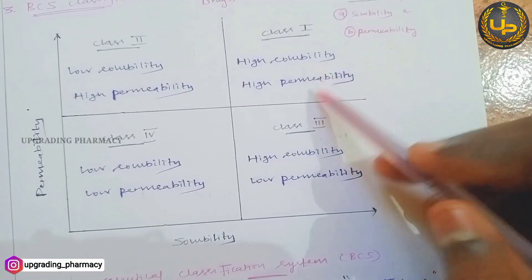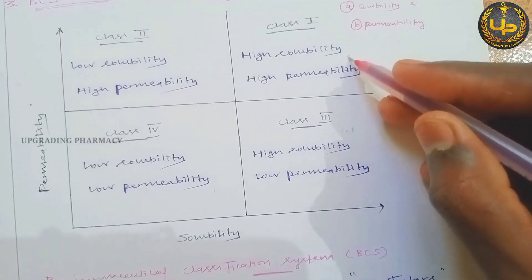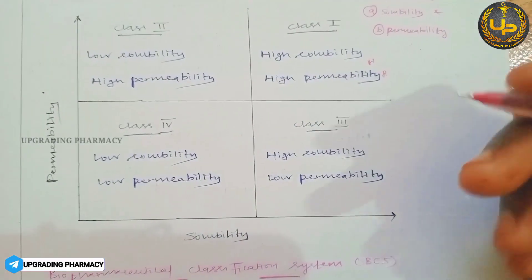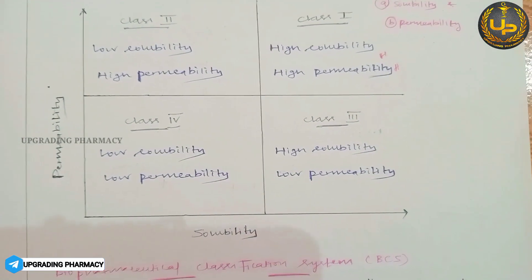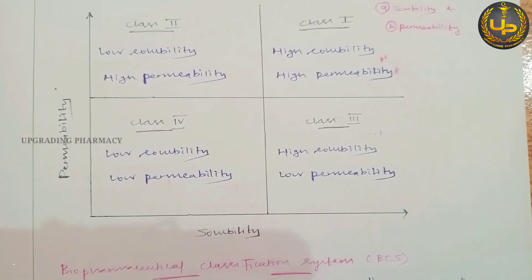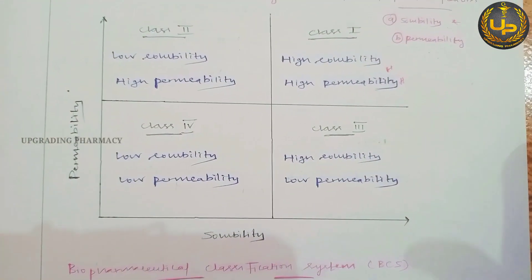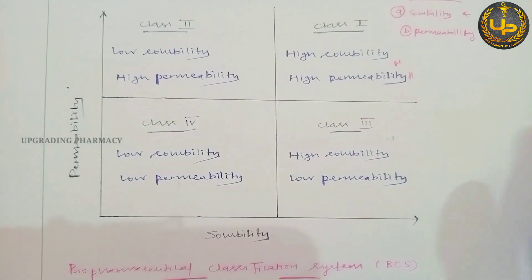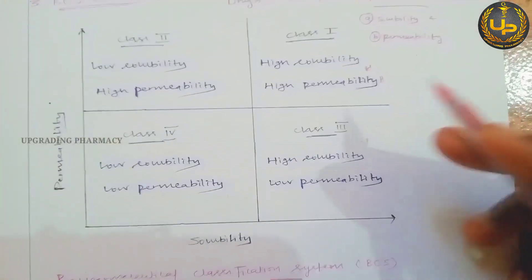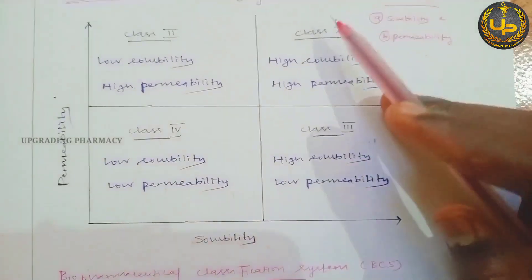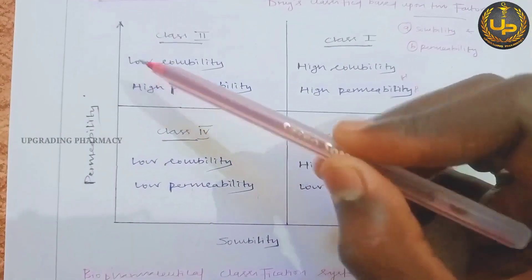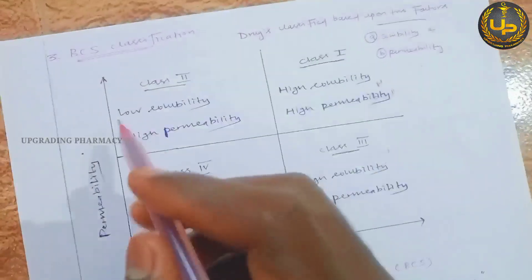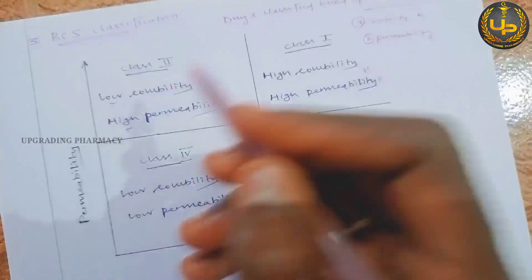Class 1 is high solubility and high permeability — both factors are higher. These drugs are easily soluble and more permeable through the cell membrane, so they are easily absorbed from the intestine or stomach and easily reach the blood circulation.